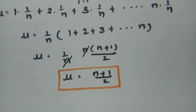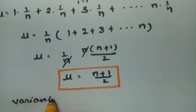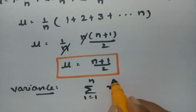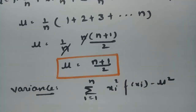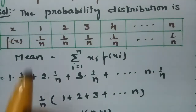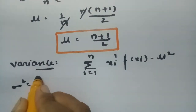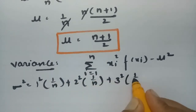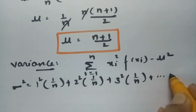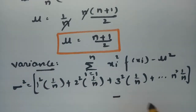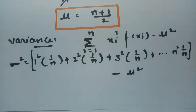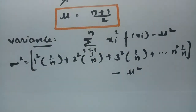For finding the variance, the formula is σ² = Σ (i=1 to n) of x_i² · f(x_i) − μ². So σ² = 1² × (1/n) + 2² × (1/n) + 3² × (1/n) + ... + n² × (1/n) − μ². Here μ = (n+1)/2, so μ² = (n+1)²/4.